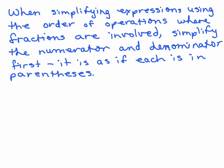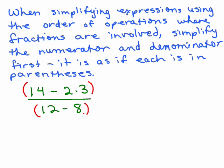So when you're simplifying expressions using the order of operations where fractions are involved, you're going to have to simplify the numerator and denominator first. It's as if each is in parentheses. In other words, both the numerator and denominator were in parentheses. So here's an example. What if you had 14 minus 2 times 3 all over 12 minus 8? Even though you don't see any parentheses, it's like you have to simplify each of those first. You can't do any cancelling or reducing until you simplify just the numerator and the denominator using the order of operations.